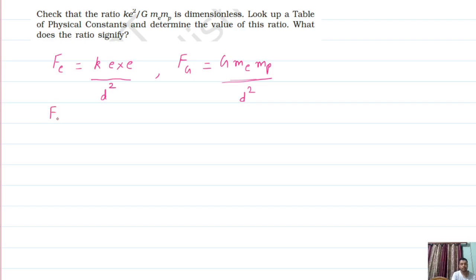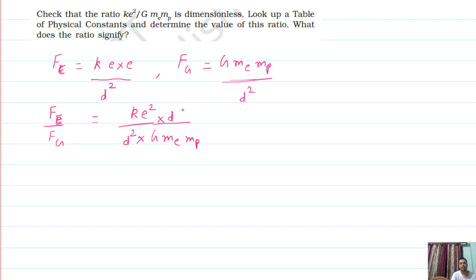Now, if I take the ratio of both quantities — the force in the electrical field divided by the force in the gravitational field — it will come: k·e² upon D² divided by G·m_e·m_p upon D². The D² cancels, and what remains is k·e² upon G × mass of electron × mass of proton. So this is the physical quantity — the ratio of the force between two charged particles due to their charges, to the force between an electron and proton due to their masses.